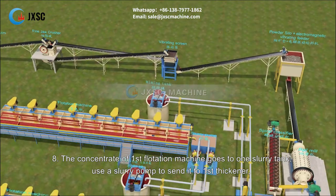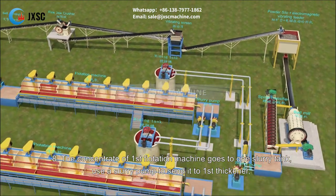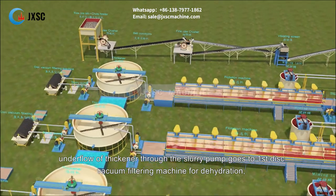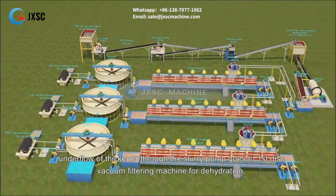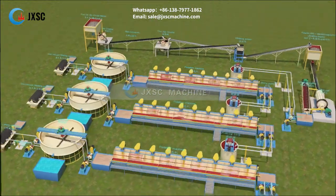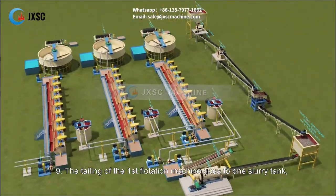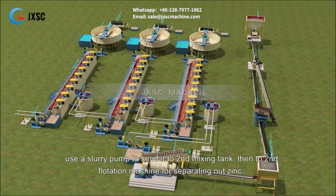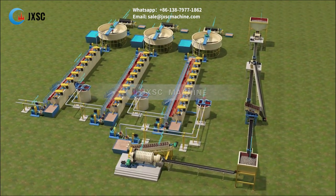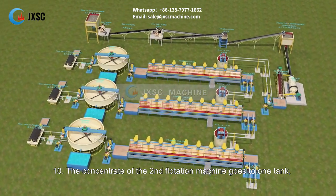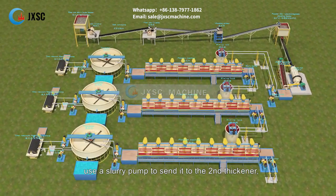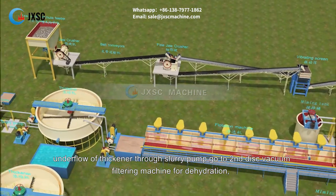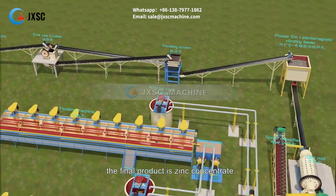The concentrate of the first flotation machine goes to a slurry tank; a slurry pump sends it to the first thickener. The underflow of the thickener goes through a slurry pump to the first disc vacuum filtering machine for dehydration — the final product is lead concentrate. The tailings of the first flotation machine go to a slurry tank, then a slurry pump sends them to the second mixing tank and then to the second flotation machine for separating out zinc. The concentrate of the second flotation machine goes to a tank, then to the second thickener, and the underflow goes to the second disc vacuum filtering machine for dehydration — the final product is zinc concentrate.